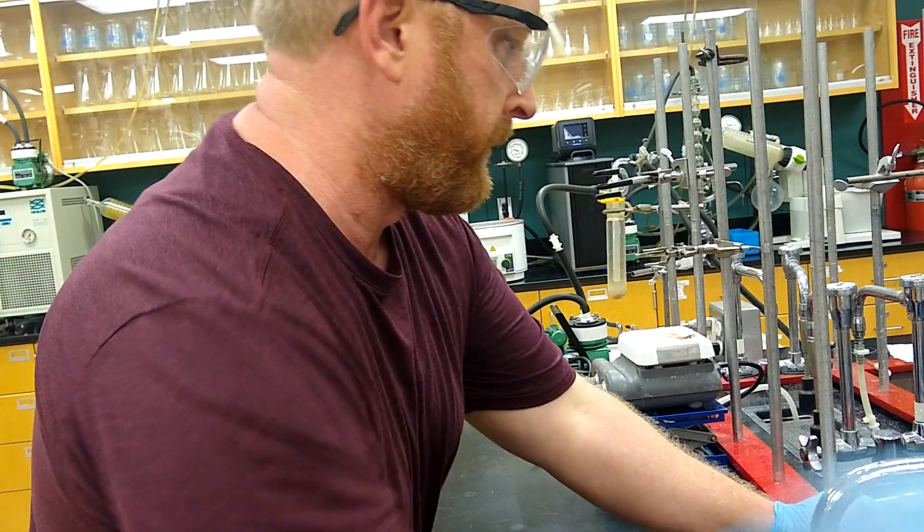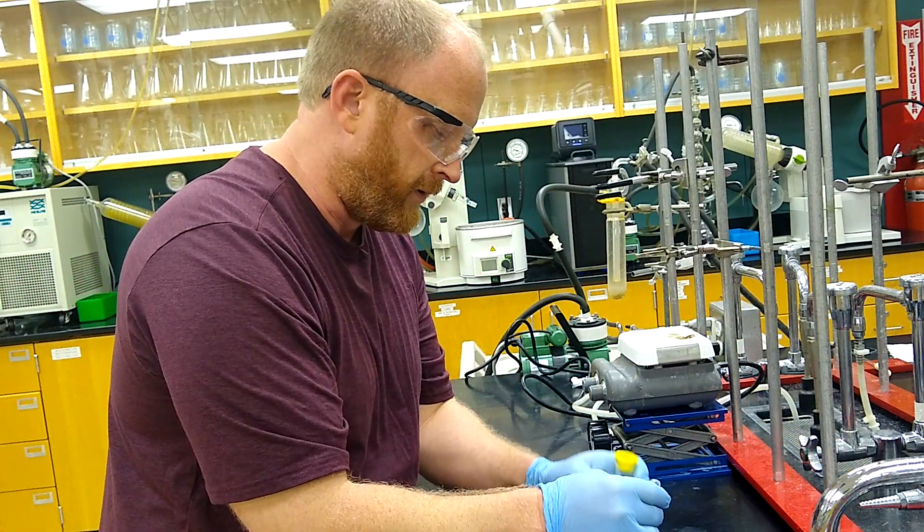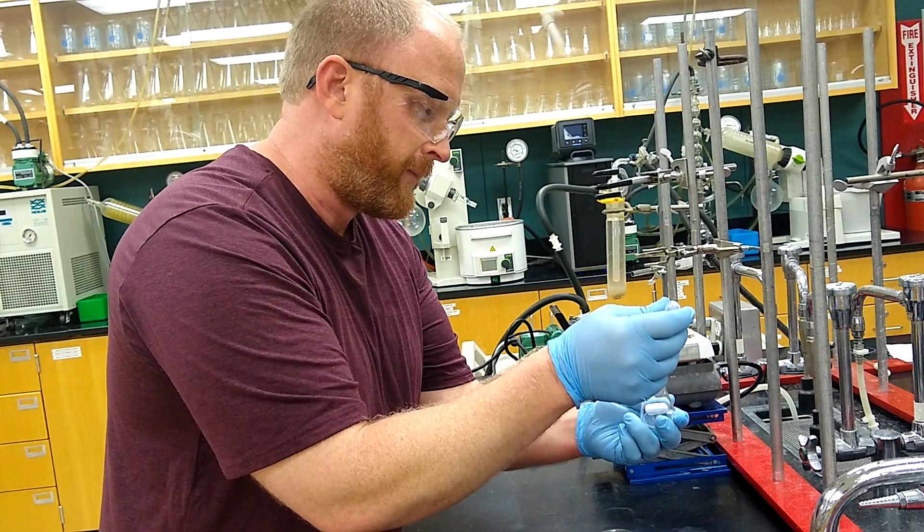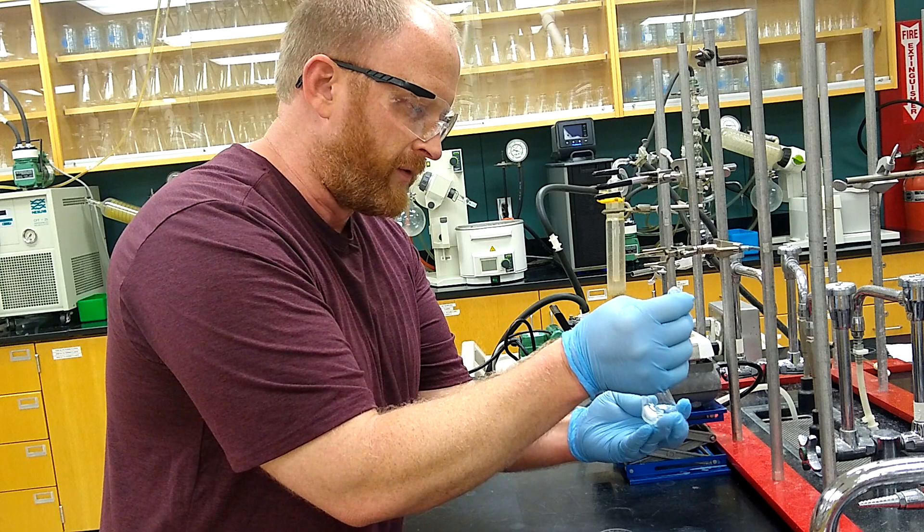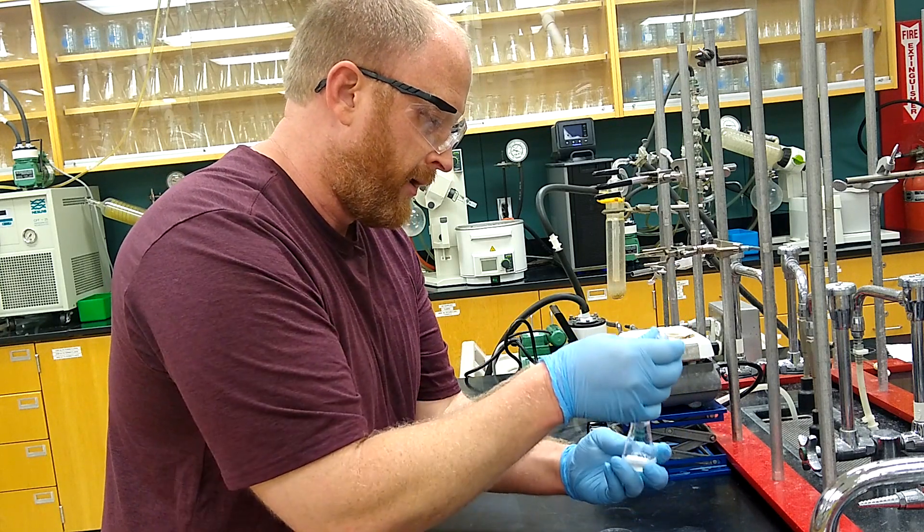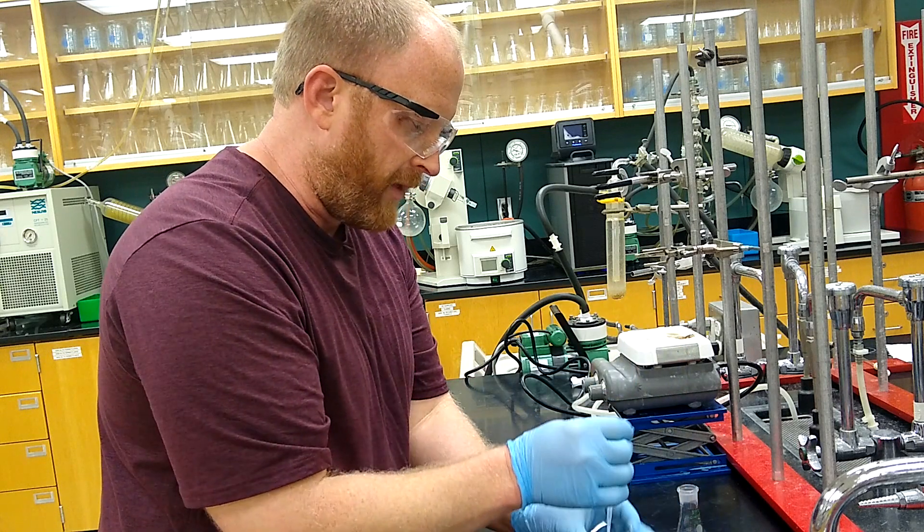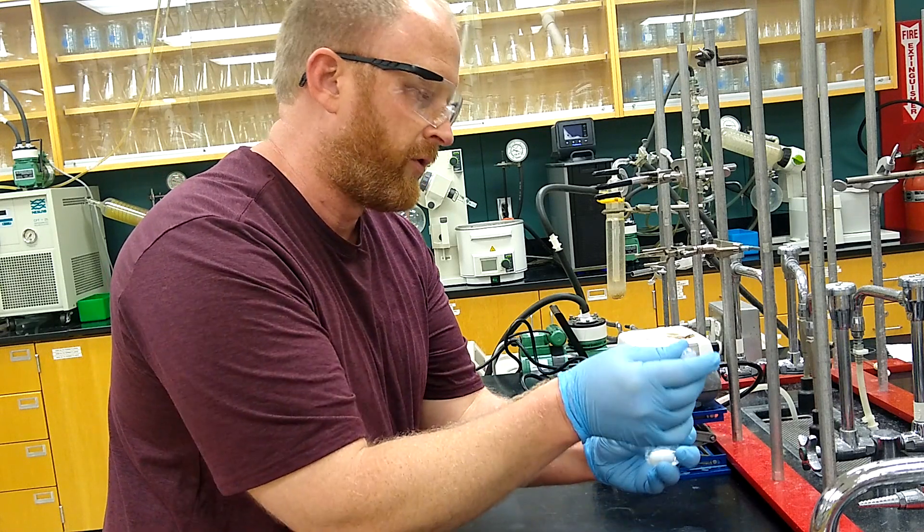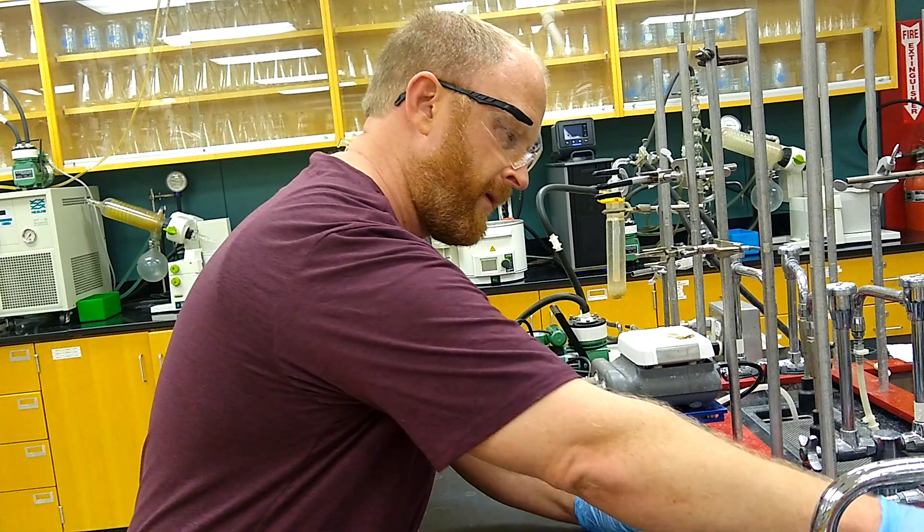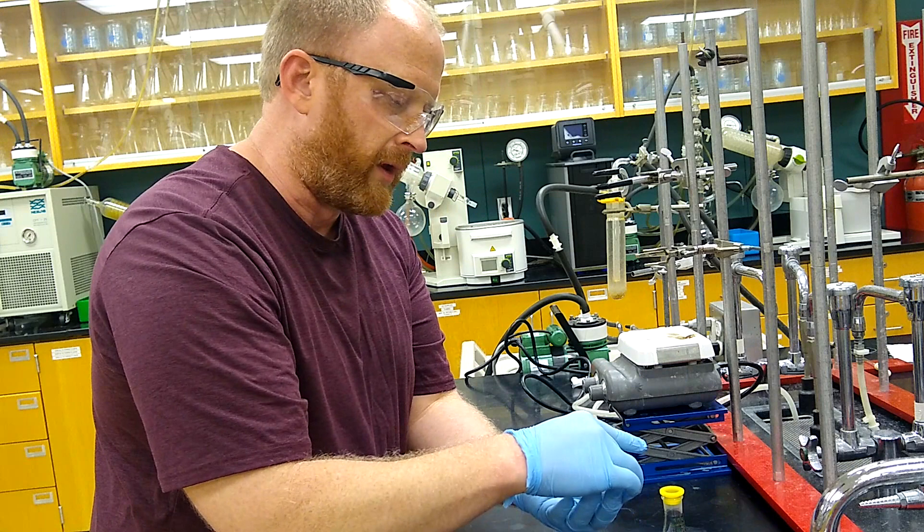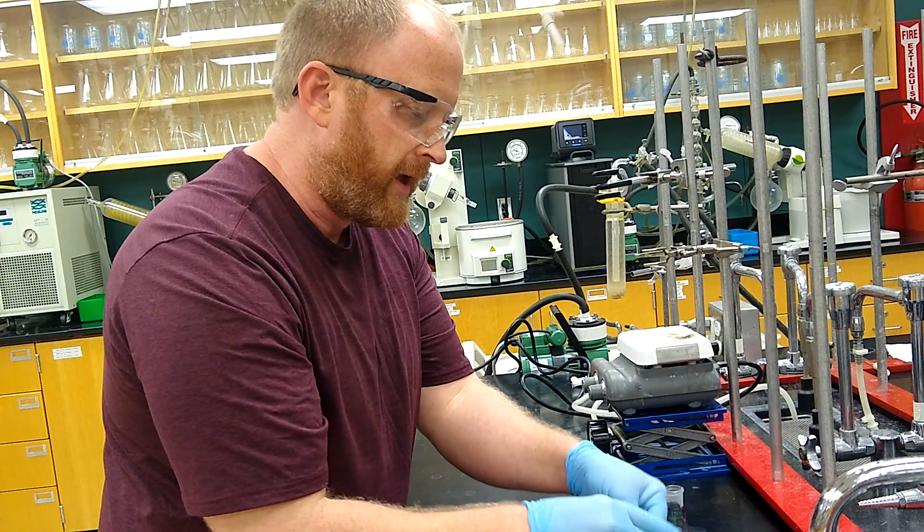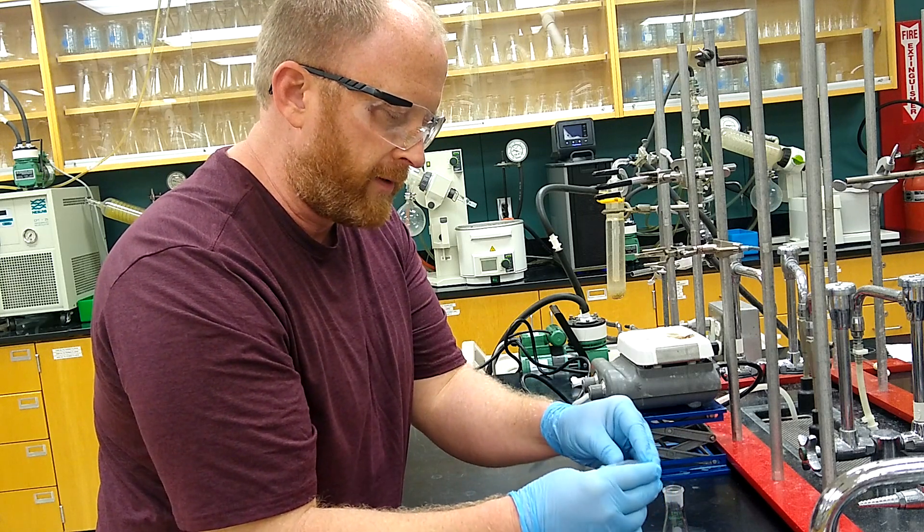Now I'm adding a few mL of aqueous sodium hydroxide—we'll email you the exact amounts of everything we used later. We're adding the base here so our cresol is deprotonated, and then we're adding some tetrabutyl ammonium bromide to act as a phase transfer catalyst.